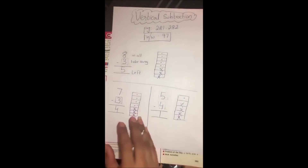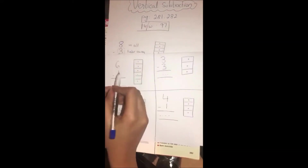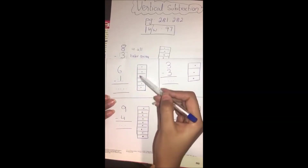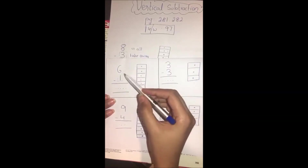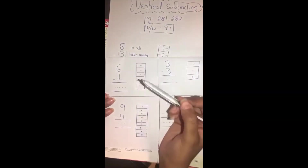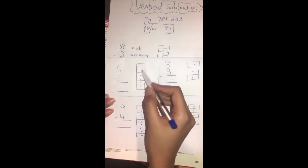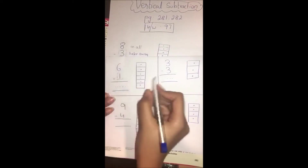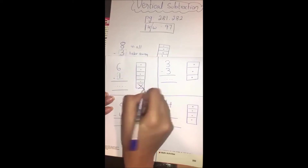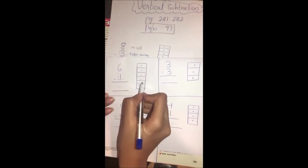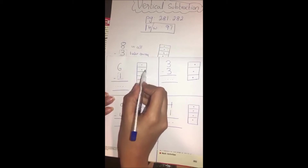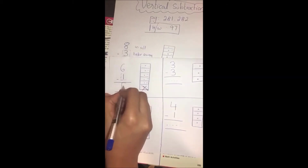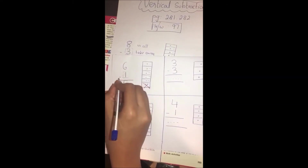Let's start over here. 6 minus 1. We have 6 in all. Yes, let's take away 1: 1, 2, 3, 4, 5. Left: 1, 2, 3, 4, 5. 6 minus 1 gives us 5.